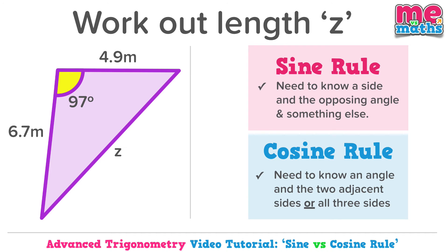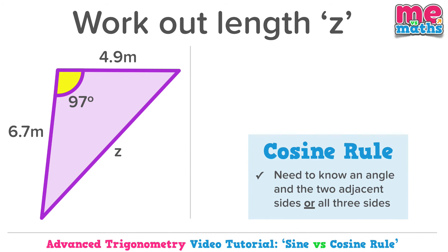Here we're being asked to find a missing side length again. We need to know a side and an opposing angle to use the sine rule. So that's a no-go for this question, as we know the angle that's labeled as 97 degrees, but we don't know the side opposite. To use the cosine rule, we need to know an angle and the two adjacent sides, which is exactly what we know here. We know 97 and the two adjacent sides. That means the two sides next to that angle, which are 4.9 and 6.7. So it is definitely a cosine rule question.